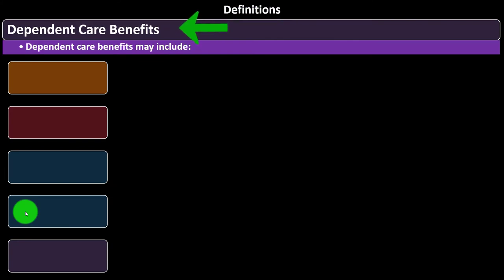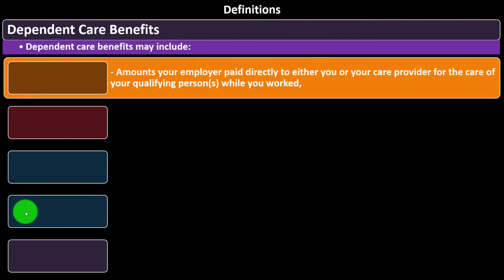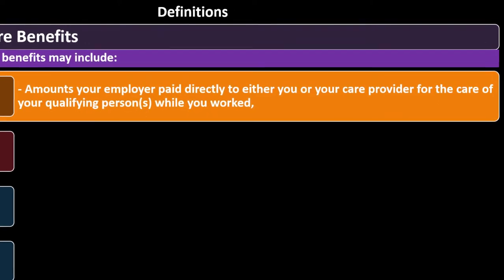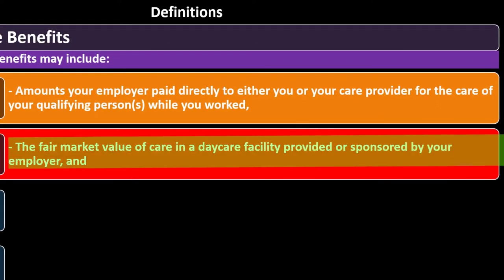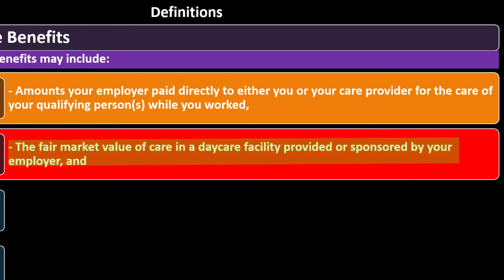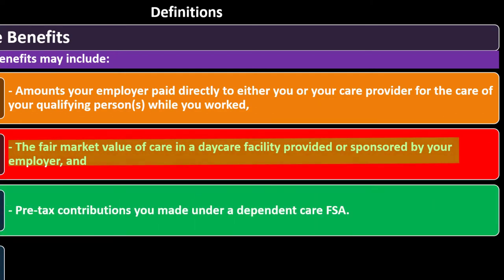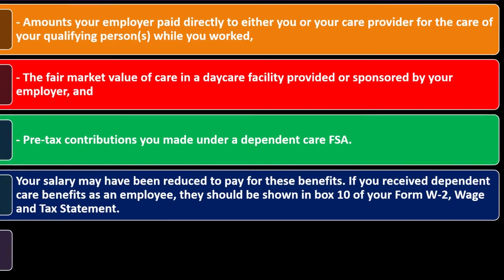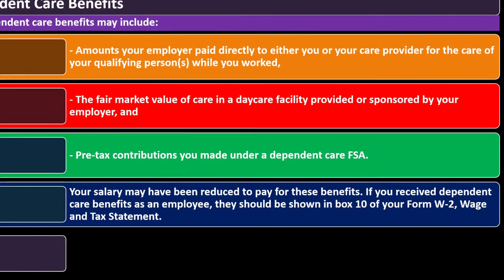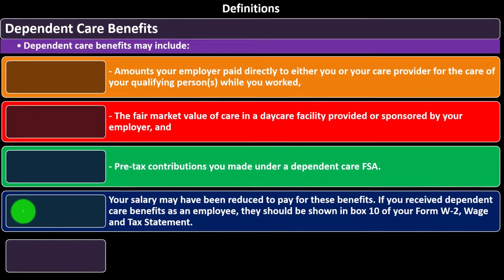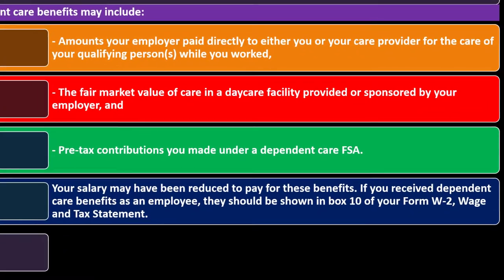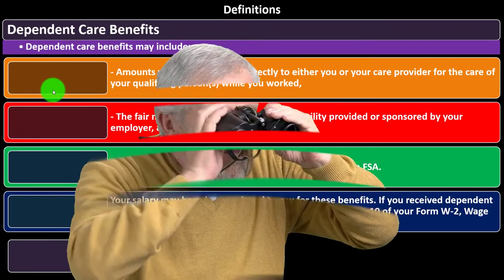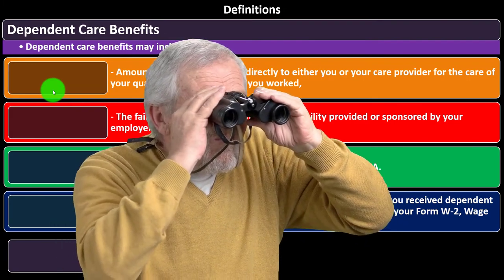Definitions. Dependent Care Benefits may include amounts your employer paid directly to either you or your care provider for the care of your qualifying persons while you worked, the fair market value of care in a dependent care facility provided or sponsored by your employer, and pre-tax contributions you made under a Dependent Care FSA. Your salary may have been reduced to pay for these benefits. If you receive Dependent Care Benefits as an employee, they should be shown in Box 10 of your Form W-2. If you don't get these from your employer, it's worth looking into as a potential benefit.